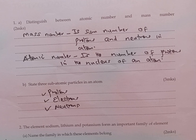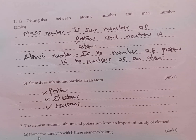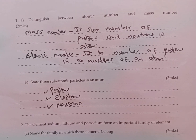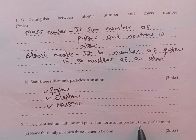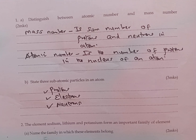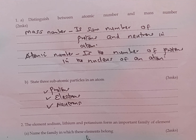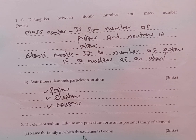We move down to question number 2, which is still under the periodic table. The element sodium, lithium, and potassium form an important family of elements. Name the family in which these elements belong. Remember, we have talked about 4 chemical families: group 1 elements, group 2 elements, group 7, and group 8.